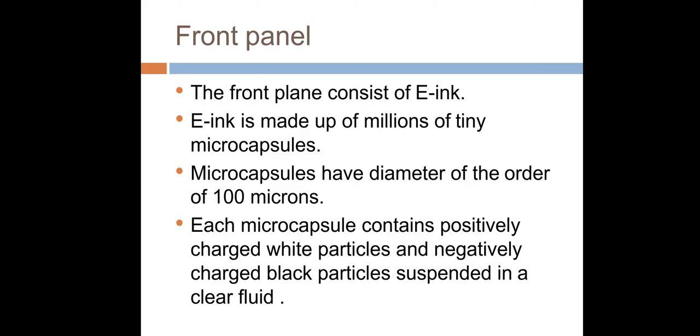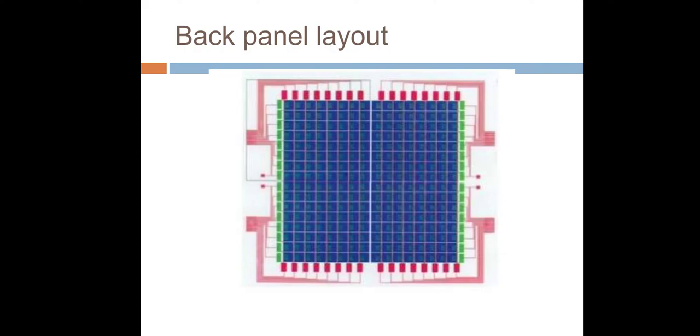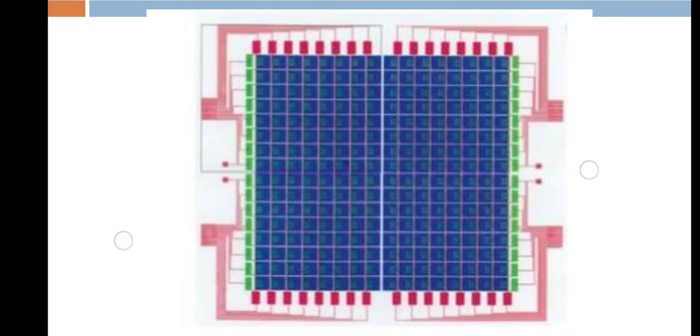So electronic ink is made up of millions of tiny microcapsules. These microcapsules have diameter of the order of 100 microns. Each microcapsule contains positively charged white particles and negatively charged black particles suspended in a clear fluid. Here is the architecture of black panel layout. You can see the electronic circuit here.